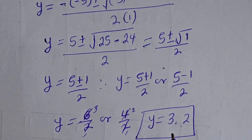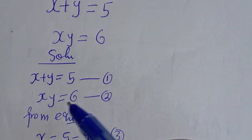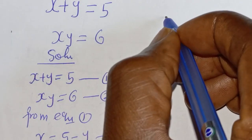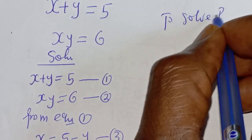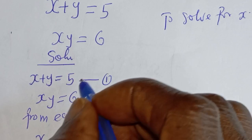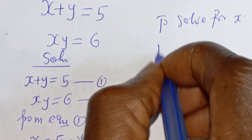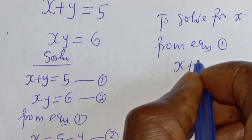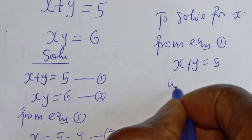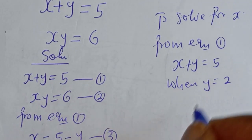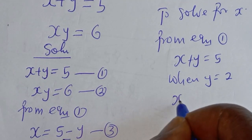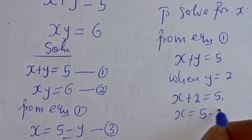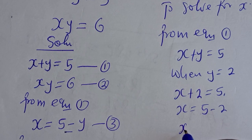Now let's solve for S since we have known the value of Y. Since we have known the value of Y, we can solve for S using either equation 1 or equation 2, but in this case I'm going to make use of equation 1. From equation 1, we have S plus Y is equal to 5. When Y is equal to 2, we have S plus 2 is equal to 5, so S is equal to 5 minus 2, giving S is equal to 3.